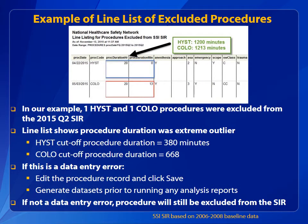The most common reason for procedure exclusion is long procedure duration. This is often a data quality issue, which should be very rare. Data entered into the system should be evaluated frequently to reduce or eliminate instances of extreme outlier long procedure duration. In this example, the hysterectomy and colon surgery were excluded because the procedures show extreme duration outliers. The cutoff procedure duration for HIST and COLO are 380 and 668 minutes, respectively. However, in this example, the HIST procedure was 1,200 minutes and the COLO procedure lasted 1,213 minutes.